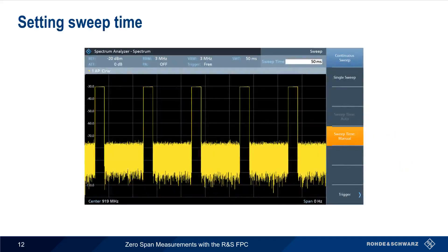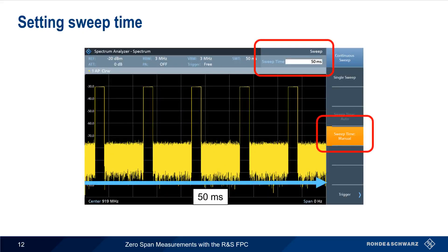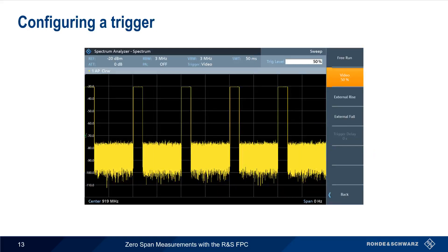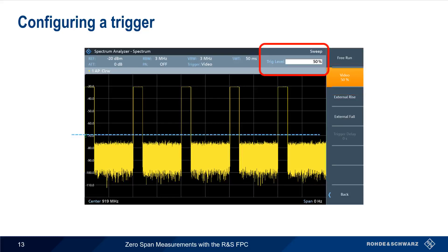Assuming that we've set our center frequency and are in zero-span mode, the next thing to do is to set the sweep time. The correct sweep time depends on the type of signal we're measuring and on how much of that signal we want to see on the screen. Changing the sweep time essentially zooms in and zooms out of the displayed signal. In order to have a stable trace or to freeze the trace on the screen, we need to set a trigger. One option is using an external trigger signal, but in most cases a simple video trigger is sufficient. We define the video trigger level as a percentage, often by experimentation. The correct level for obtaining a stable, non-moving signal will vary by signal type, though there's usually a fairly wide range of trigger levels that will work, especially if the signal-to-noise ratio is high.